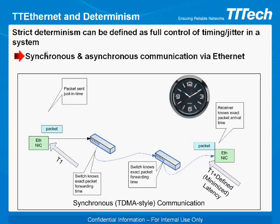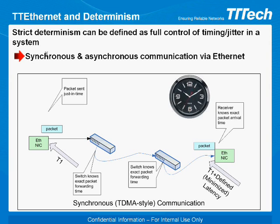TT Ethernet enables full control of jitter and latency throughout the network. It is a deterministic Ethernet technology for time, mission, and safety critical systems. It provides robust TDMA bandwidth partitioning and synchronous communication over asynchronous Ethernet networks. This facilitates flexible synchronous and asynchronous communication and handling of video, audio, critical controls, and standard LAN applications in one network. Beyond strict determinism, TT Ethernet enables design of N-redundant networks and highly dependable systems.